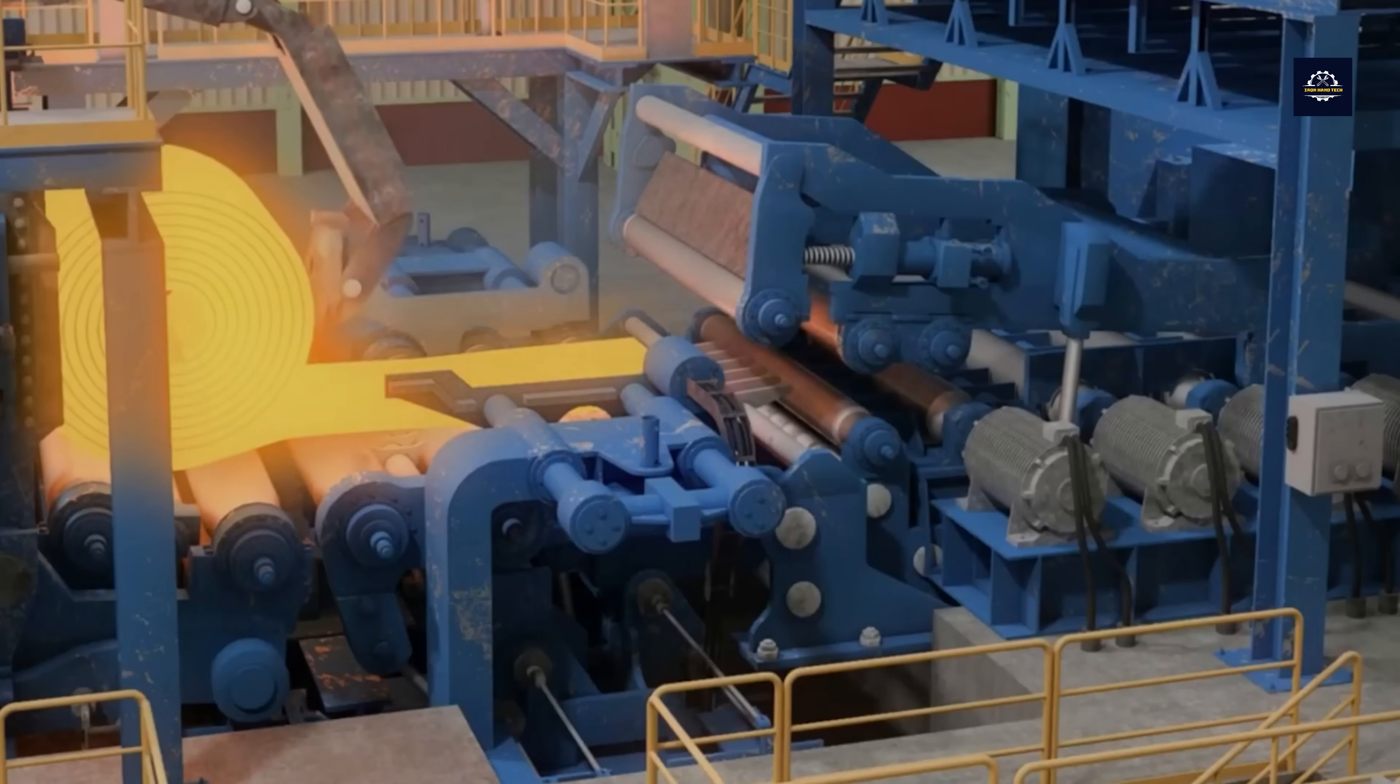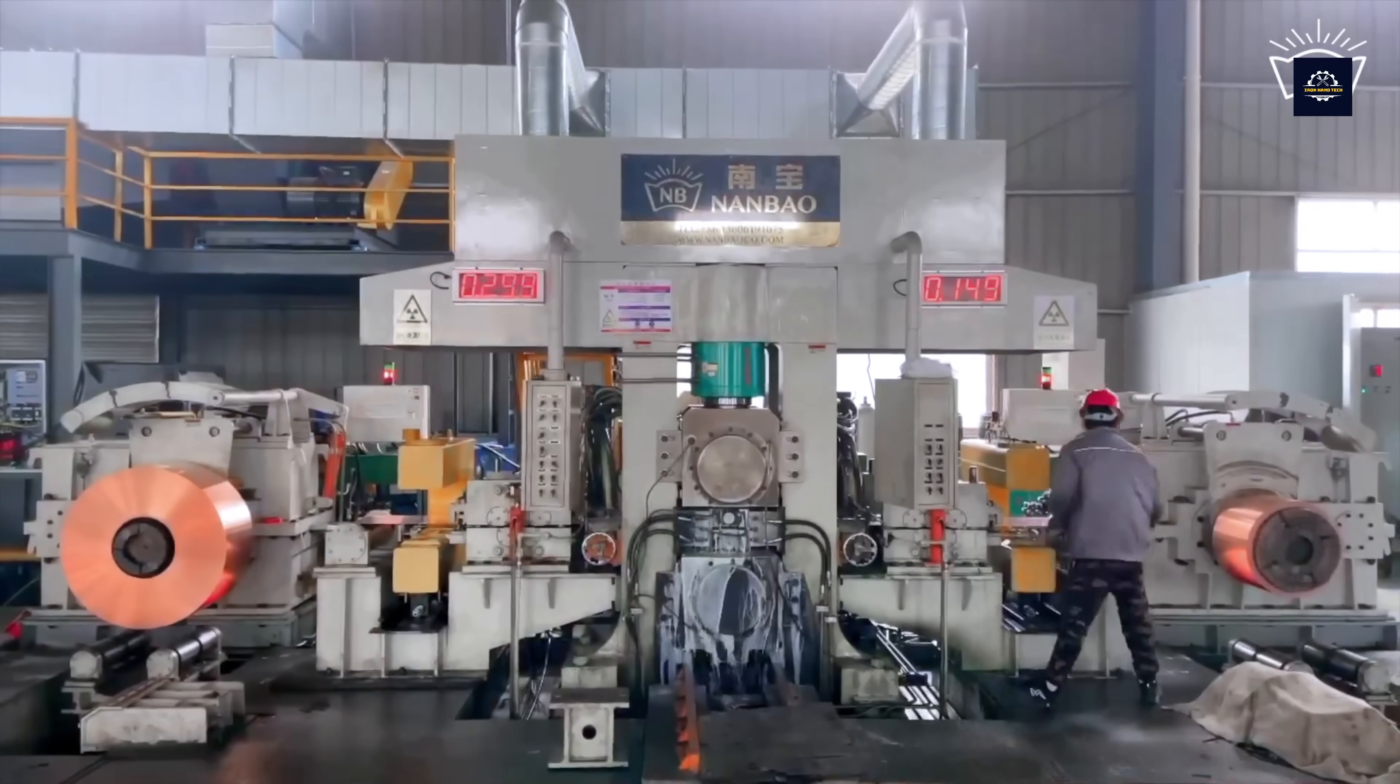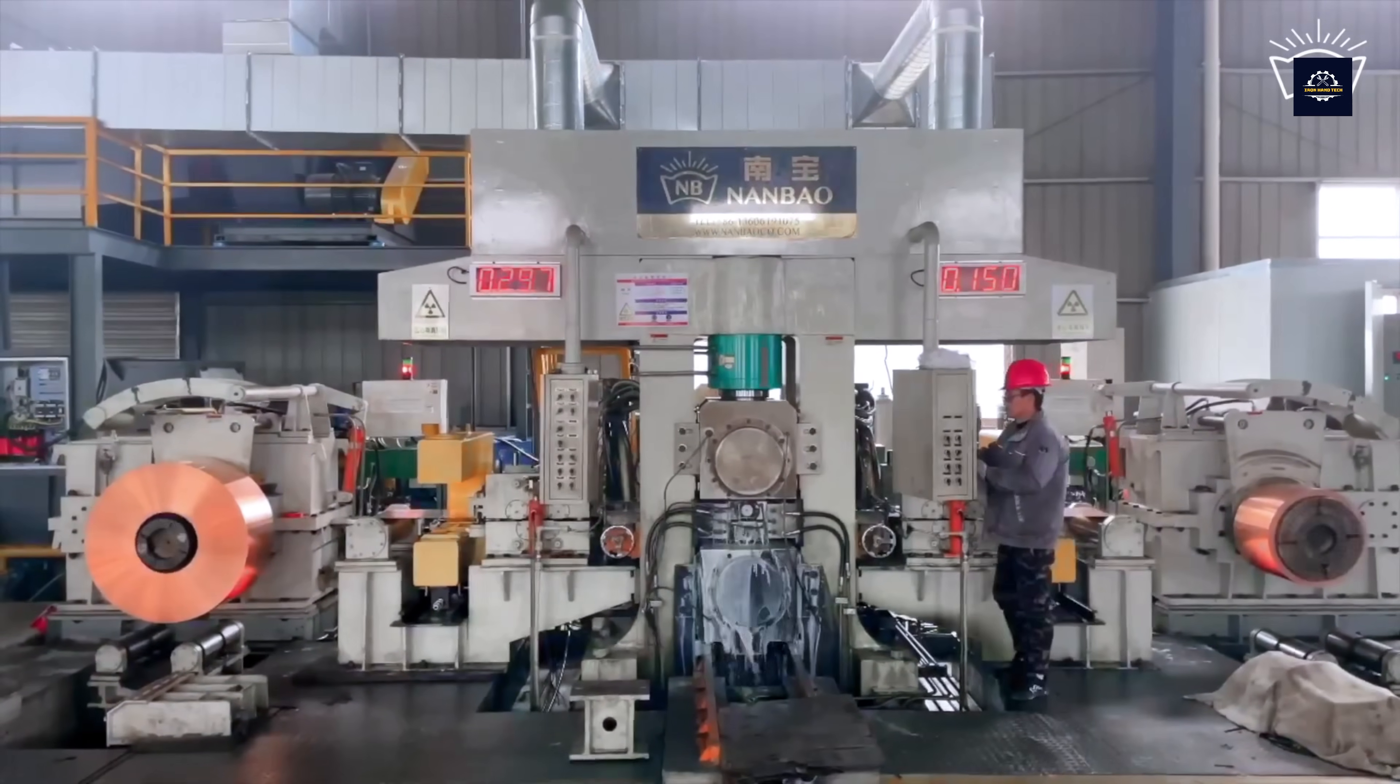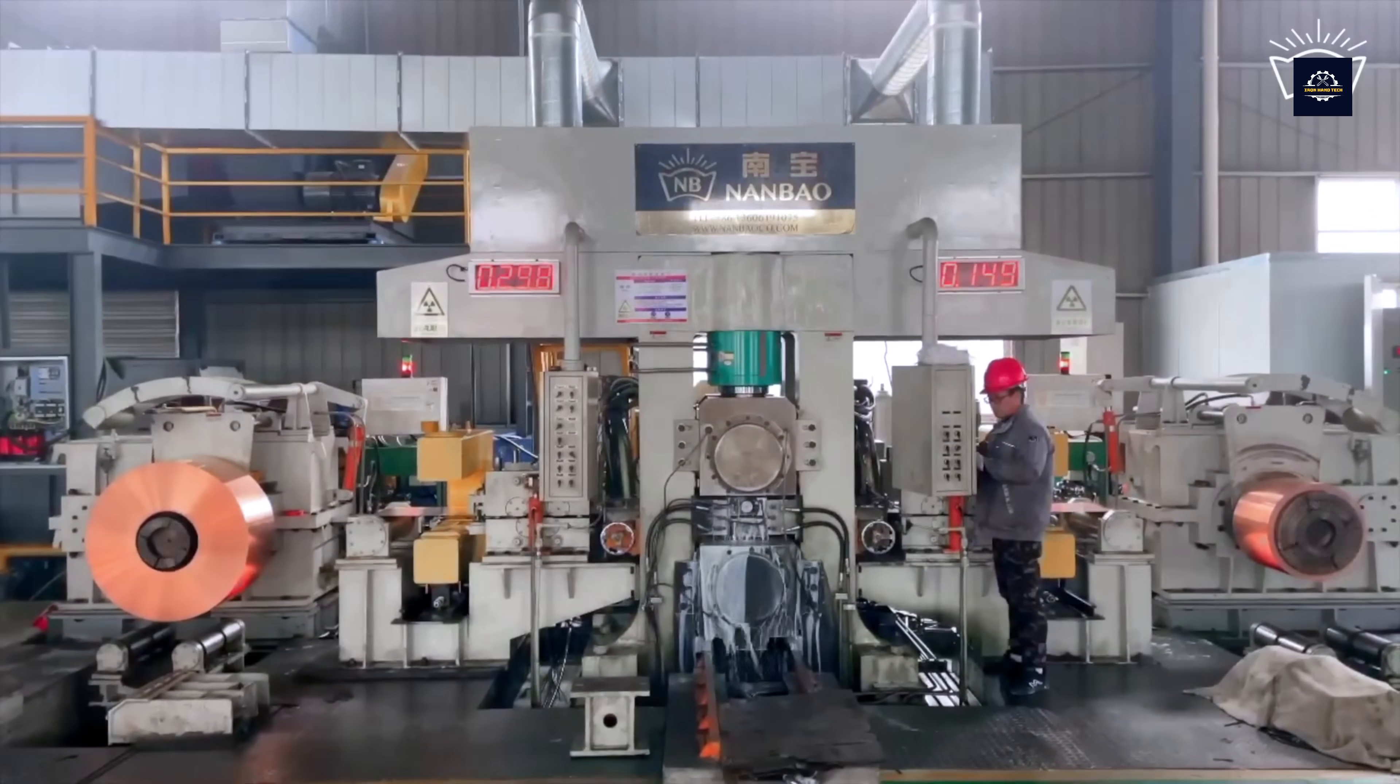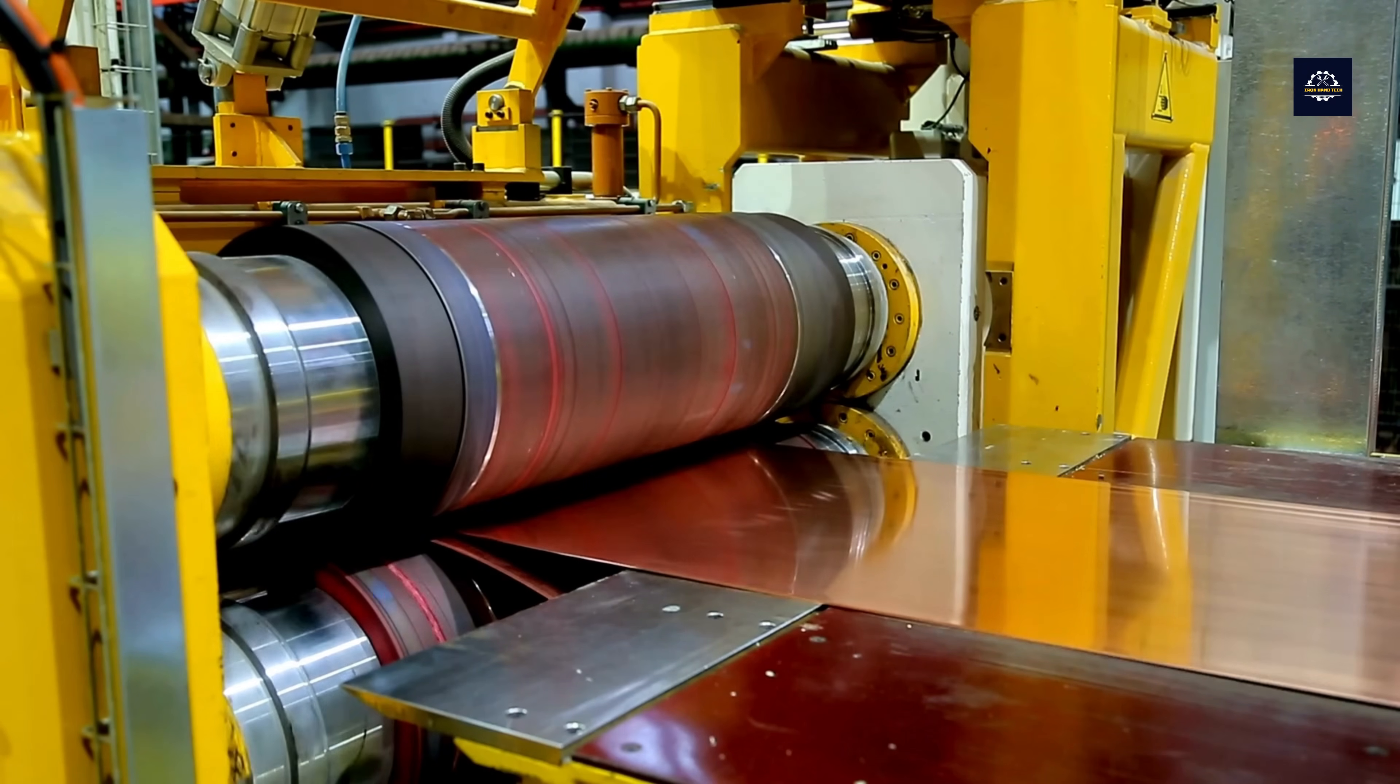After hot rolling, the copper is transferred to cold rolling. Cold rolling helps thin the copper sheets to precise thickness and improves the material's hardness. Cold rolling takes place at room temperature and shapes the copper into thinner sheets with exact thickness. This is the final step to prepare the copper for other applications.